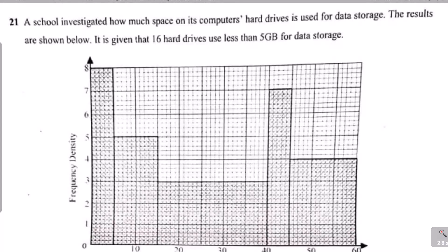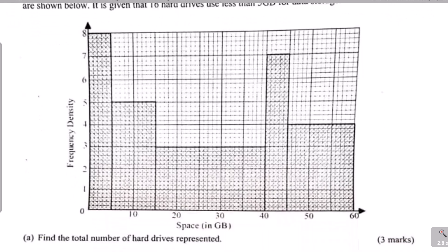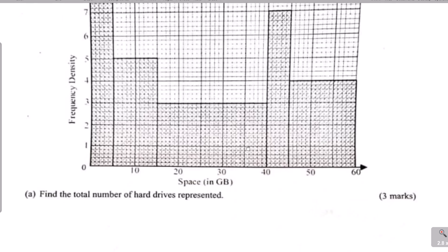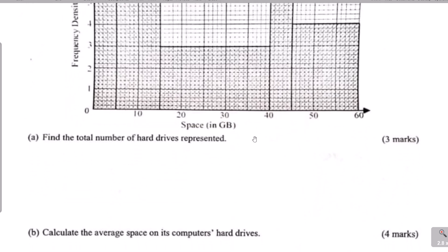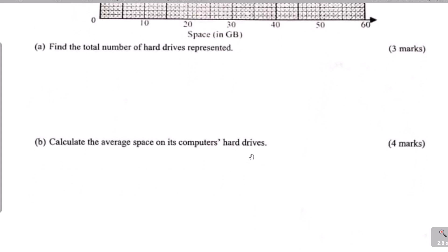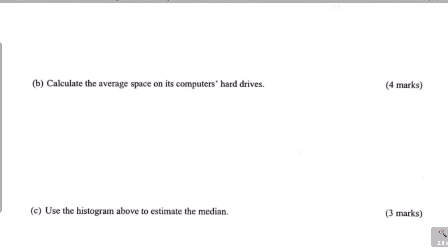Hello and welcome. Let us solve this question on histograms. A school investigated how much space on its computers' hard drives is used for data storage. The results are shown below. It is given that 16 hard drives use less than 5 GB for their data storage. The histogram has frequency density on the Y axis and space in GB on the X axis. Part A: find the total number of hard drives represented. Part B: calculate the average space on the computers' hard drives. Part C: use the histogram to estimate the median.